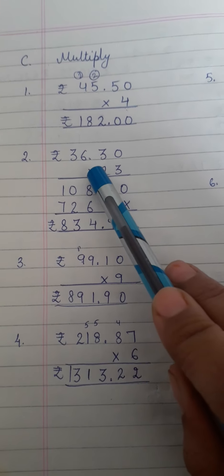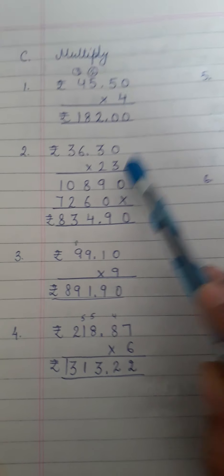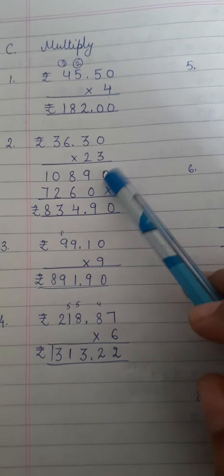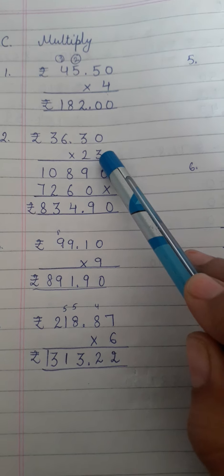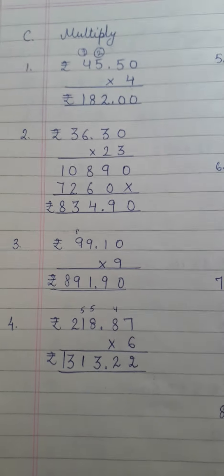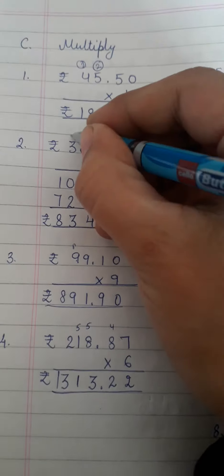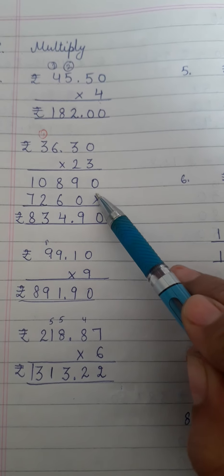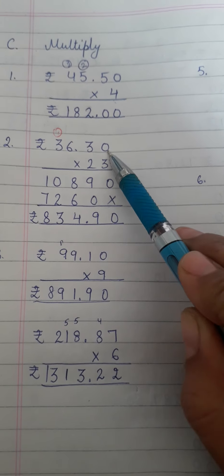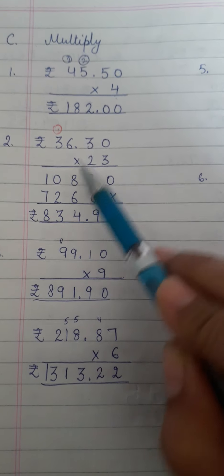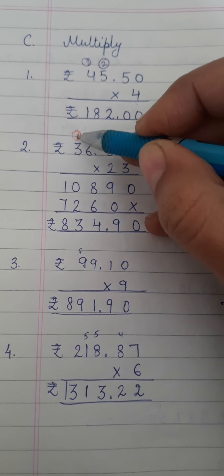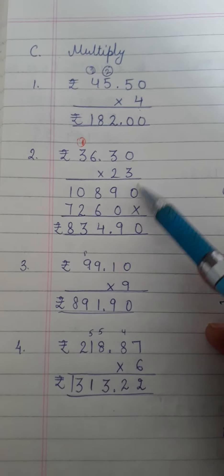Second question 36.30 multiply by 23. So 36 rupees and 30 paisa is multiplied by 23. First this will be multiplied by 3. 3 zeros are 0, 3 threes are 9, 3 sixes are 18 carry over 1. 3 threes are 9 plus 1 becomes 10. Now put a cross as we are moving to another number.